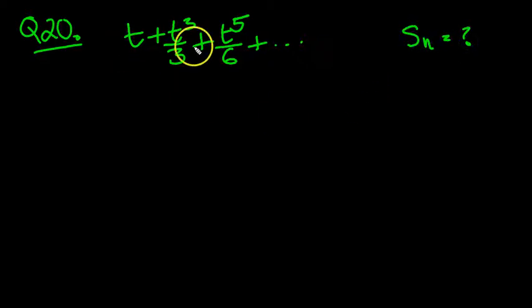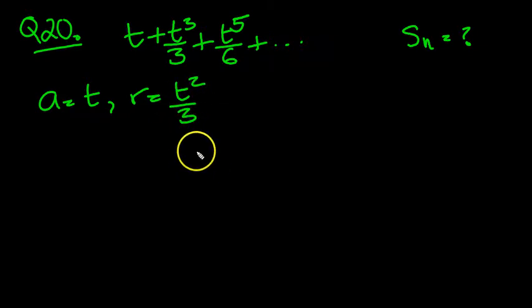Let's have a look at this one, sum this sequence here, this GP. Here a equals the first term t, and the common ratio - we're multiplying by t squared over 3 to get each subsequent term.